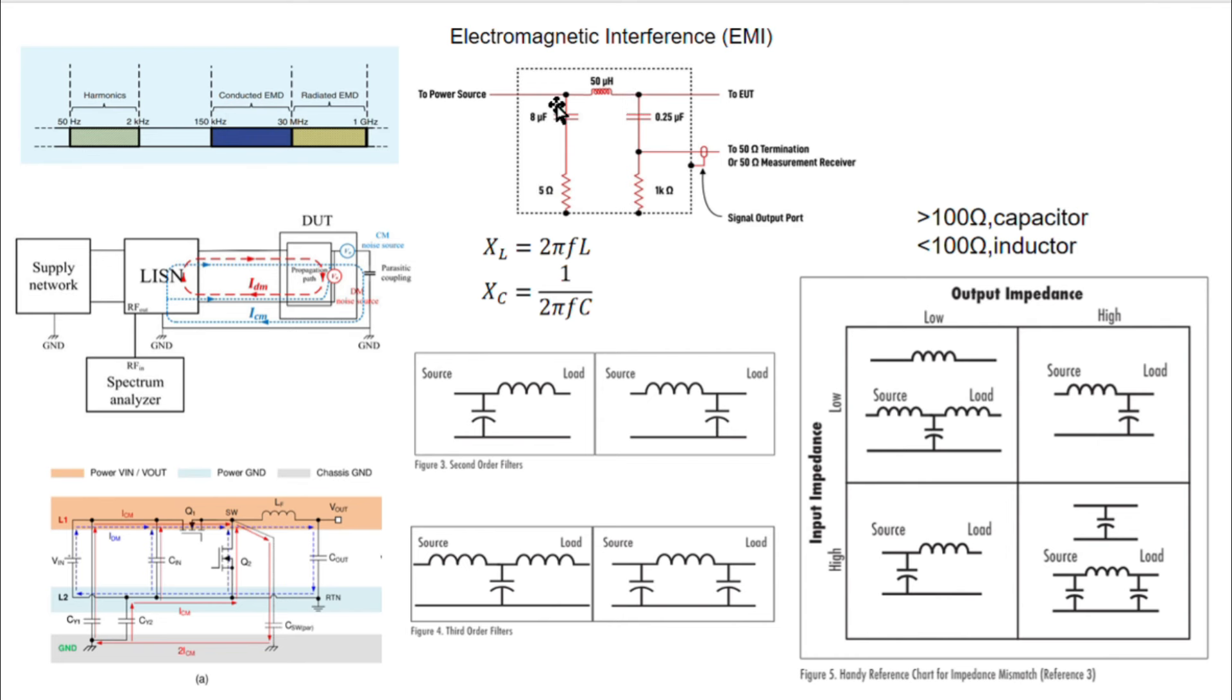Then, to avoid the inductor from the power influencing our measurement, we put a capacitor in front of LISEN to divert the noise from the source power supply. Now, we have an LC filter, which can have a resonant frequency, thus a resistor is added to dampen the oscillation.